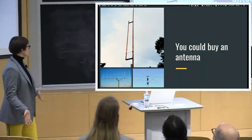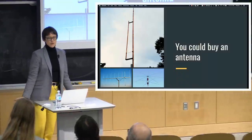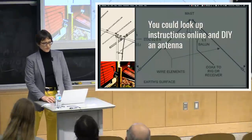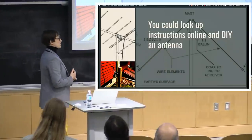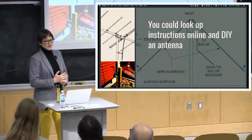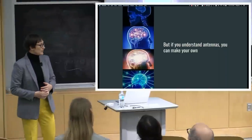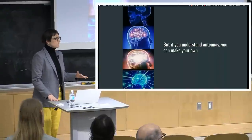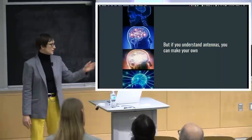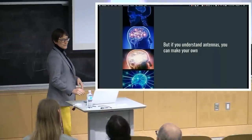So why are we having this talk? You could just buy an antenna—you wouldn't have to listen to me, and you'd have a free Friday night. You could look up instructions online and make one yourself. There are a lot of perfectly respectable instructables out there. But if you understand how antennas work and why they do what they do, you can make your own out of literally anything. You can make a chair radiate, a doorframe radiate, a bed radiate—whatever you want.